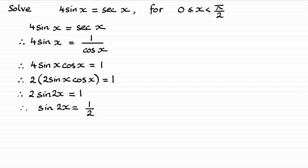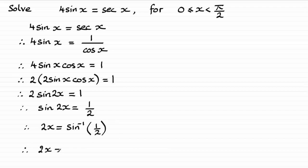To get 2x, I just need to take the inverse sine of both sides, leading to 2x equaling the inverse sine of 1 half. This should be very recognisable — in degrees that's 30 degrees. But we've got to work in radians, so 2x equals the equivalent of 30 degrees in radians, which is pi upon 6 radians.